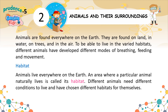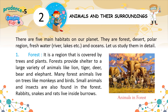Habitat. Animals live everywhere on the earth. An area where a particular animal naturally lives is called its habitat. Different animals need different conditions to live and have chosen different habitats for themselves. There are five main habitats on our planet: forest, desert, polar region, freshwater — rivers, lakes, etc. — and oceans.